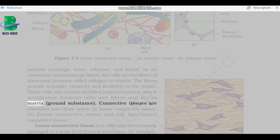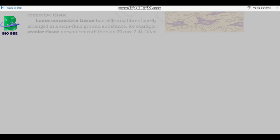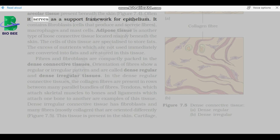Connective tissues are classified into three types: loose connective tissue, dense connective tissue, and specialized connective tissue. Loose connective tissue has cells and fibers loosely arranged in a semi-fluid ground substance, for example, areolar tissue present beneath the skin. Often it serves as a support framework for epithelium. It contains fibroblasts, cells that produce and secrete fibers, macrophages, and mast cells.